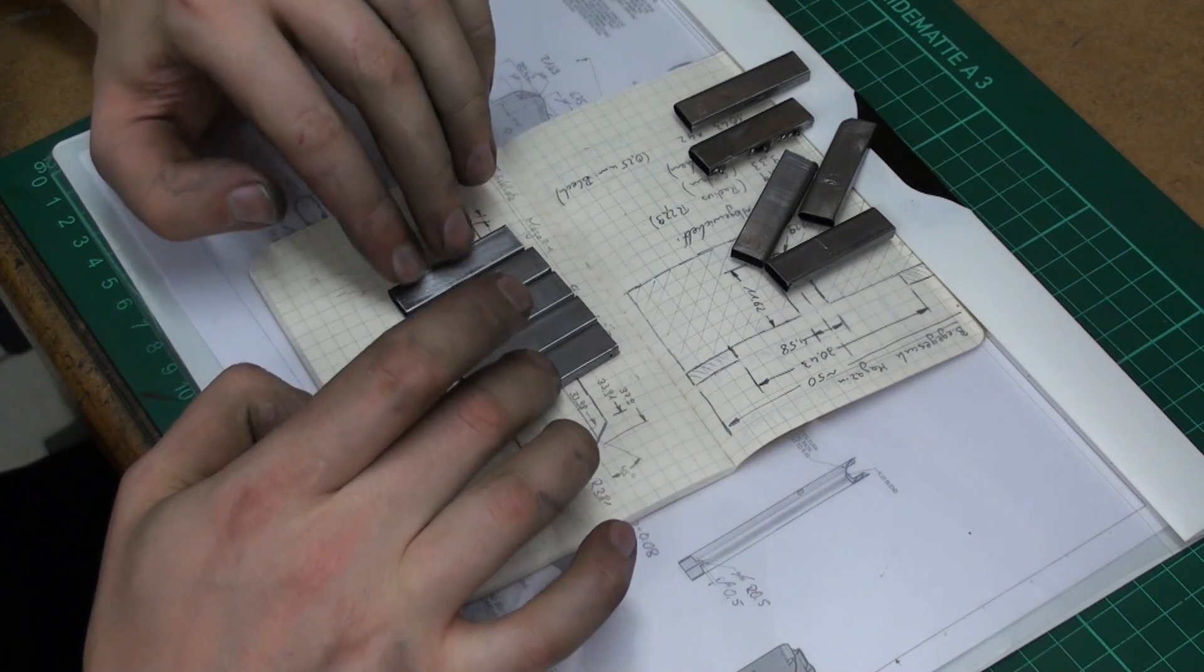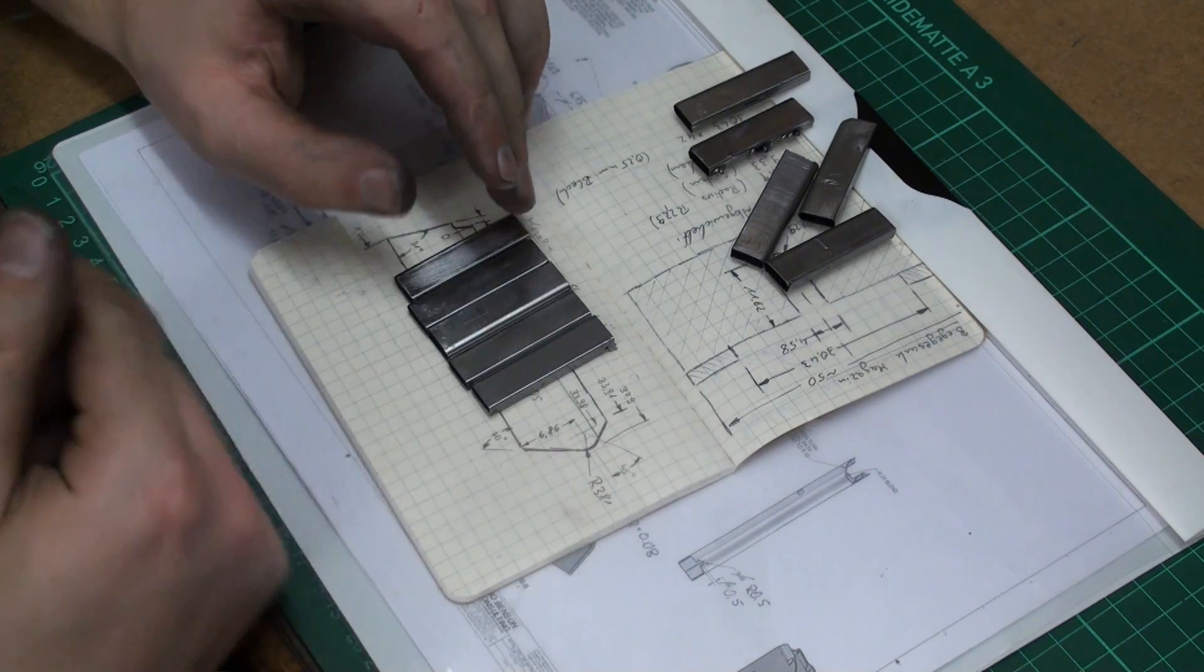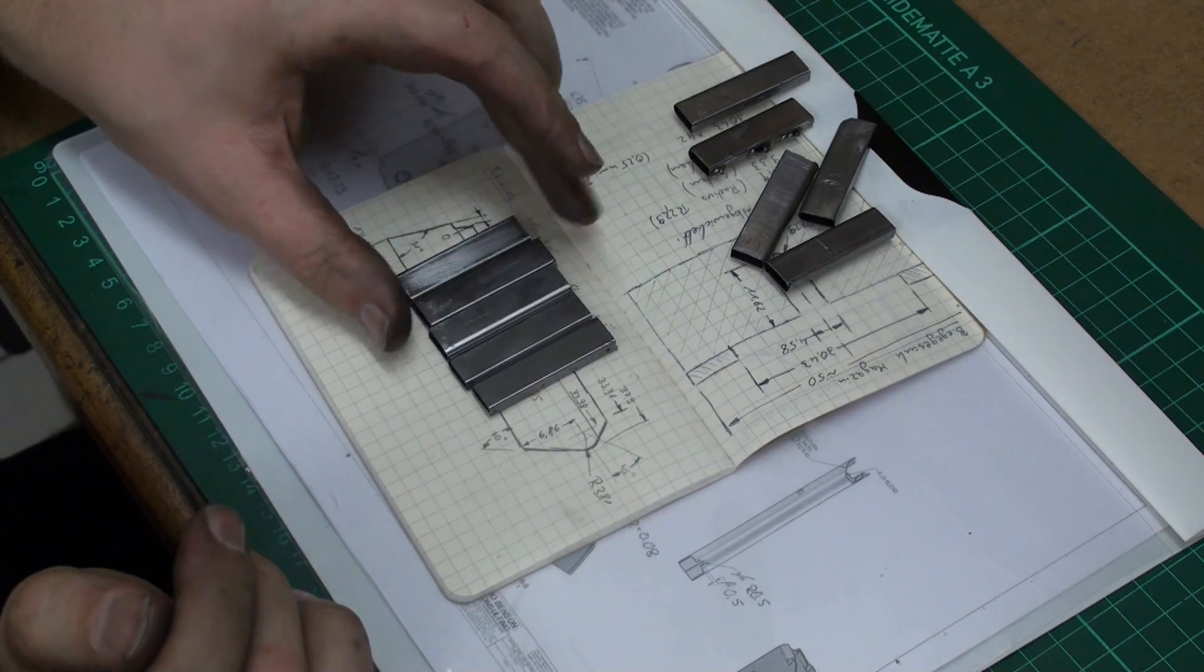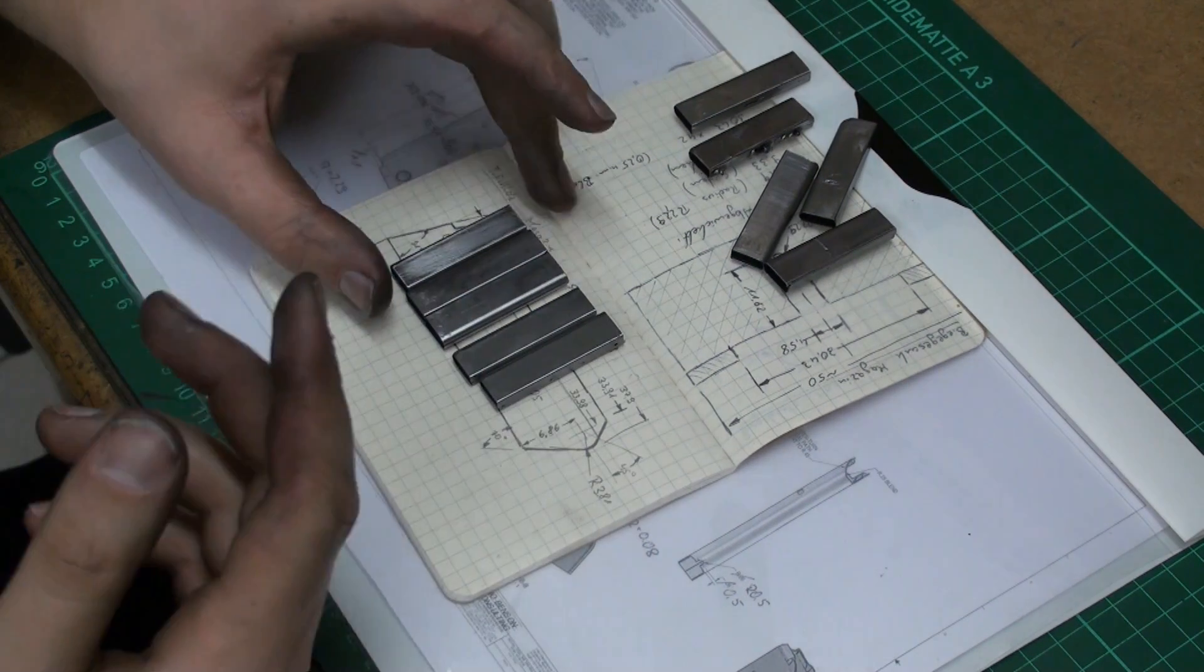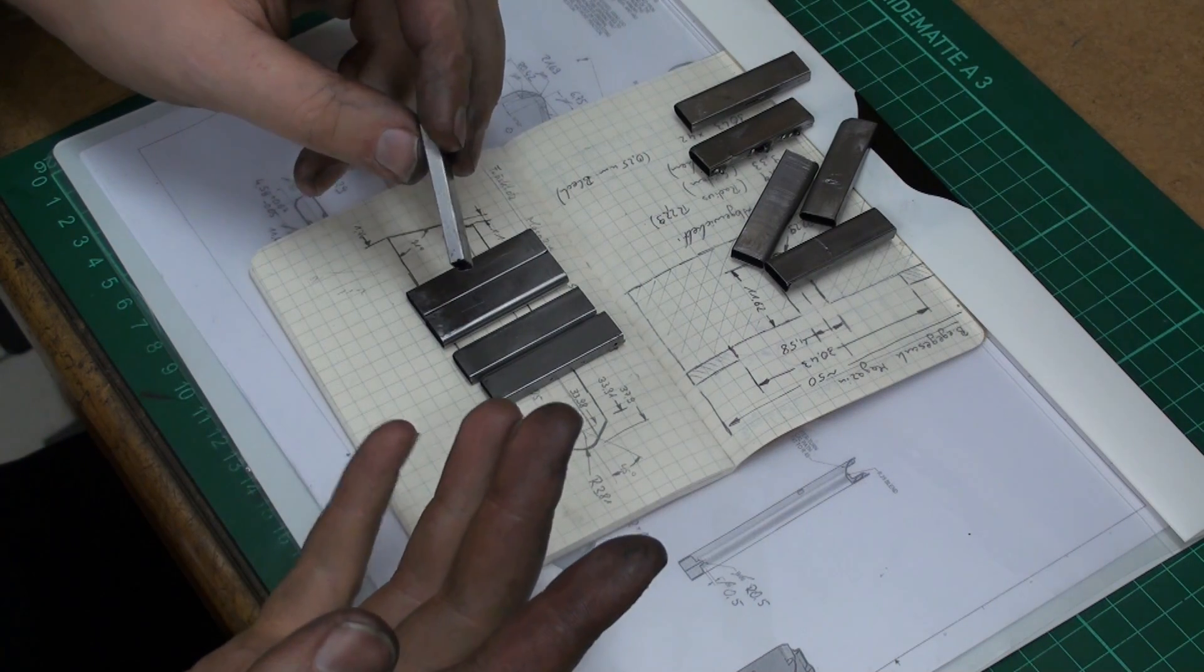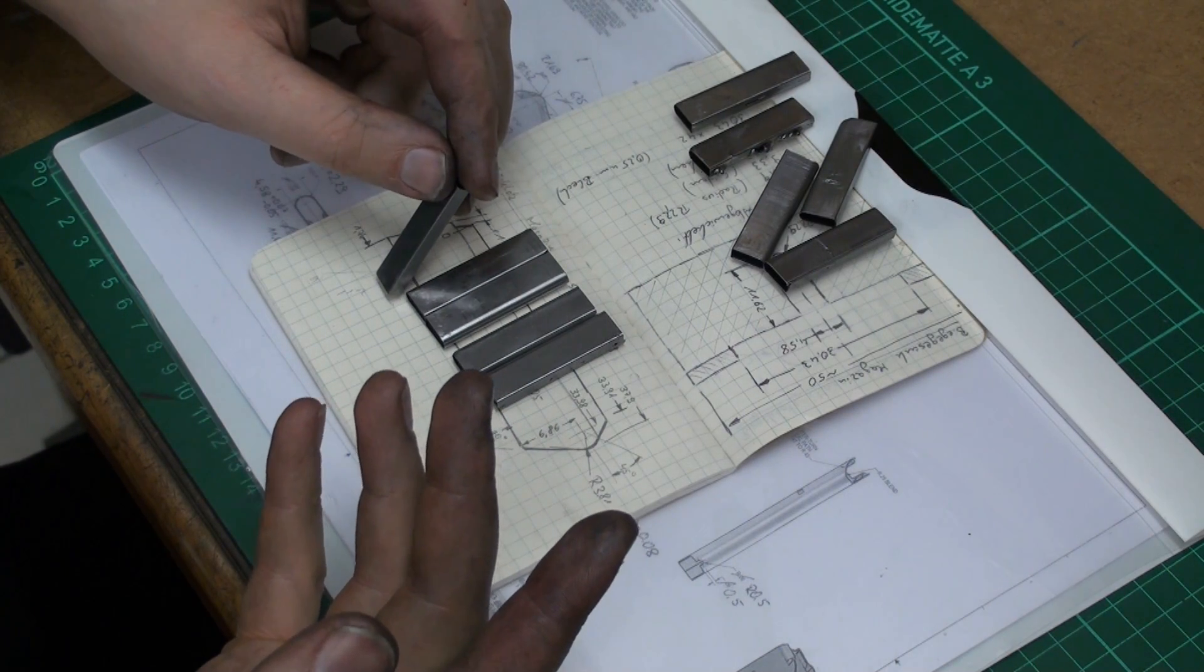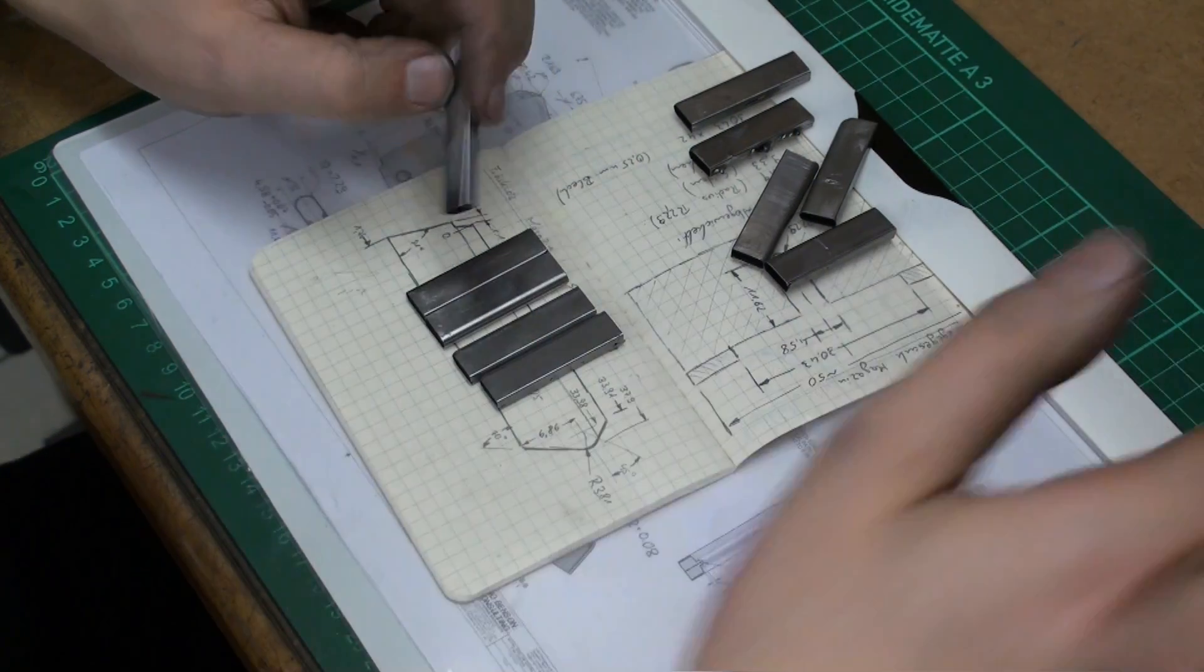And now I have these five pieces. And I will try to get at least two functional magazines out of these five raw pieces. But the machining on these will be another part for now. Thank you for watching and hope to see you again.